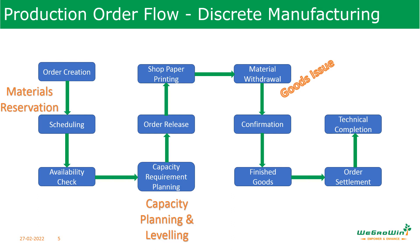The components required to produce the products are issued with reference to the production order. The product is produced and received into stores, and the finished product is confirmed with respect to the production order. The product is put into a store location, the goods receipt is posted, and finally settlement of production is ensured with the technical completion.